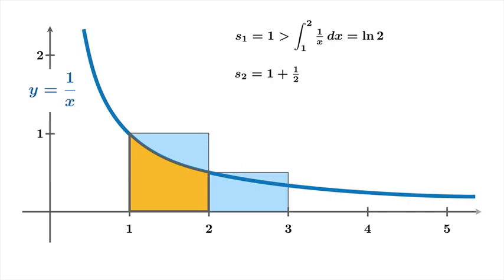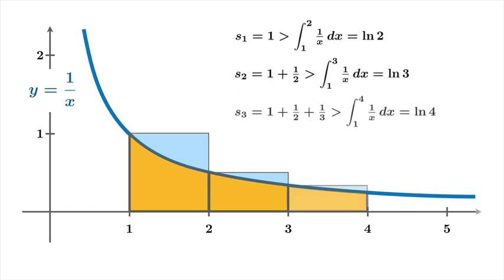So s₂ is the sum of one and a half. It's the total area of these first two boxes, which graphically you can tell has to be greater than the integral of the reciprocal function from one to three, which is ln(3). s₃ has to be greater than the integral from one to four of the reciprocal function, which is ln(4), and so on.